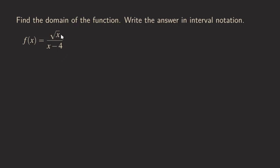It has the square root in the numerator, and then there is a linear expression in the denominator. You may say isn't that easy because we cannot divide by zero, so x cannot be four. But it's actually not that simple because there is a square root in the numerator, and that can actually affect how we write down the domain, because there are also restrictions on what x can be because of the square root.